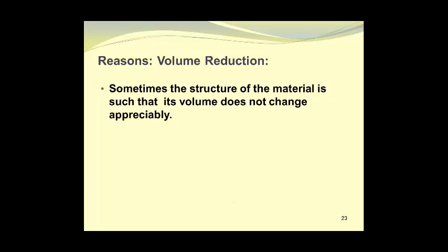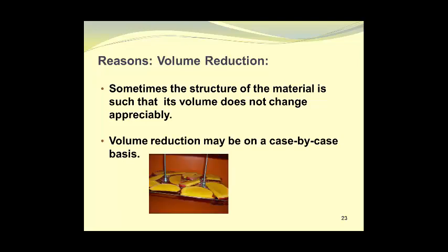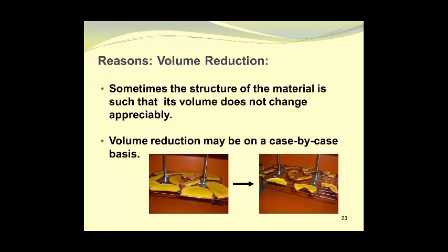Sometimes the structure of the material is such that its volume does not change appreciably. Volume reduction may be viewed on a case-by-case basis. Here we see some mango slices in a dryer before the drying process has begun, and with time, when the final product is ready to be removed, you can see just how much the size of each one of these mango slices has changed by viewing the amount of space between the slices. So we definitely have a volume reduction in this case.